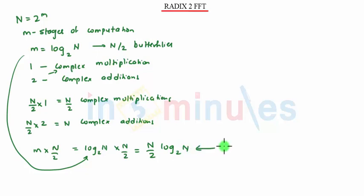These are for complex multiplications. Similarly for complex additions, m times N gives us N times log base 2 of N. This is for complex additions.